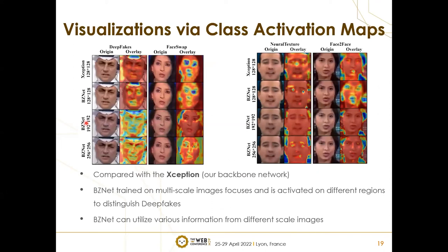After training, we wanted to see where the model focused on images at different scales. We compare against Xception as the baseline, trained only with 128×128 images, while BZNet is trained with 128×128 plus SR images at 192 and 256. Looking at the class activation maps (red regions), you can see the focus areas are very different across scales. At 128, it focuses on most of the facial area, but at larger scales it narrows down more to specific facial expressions. This shows that BZNet can utilize various information from different scale images.